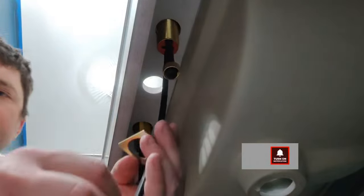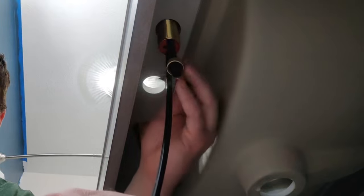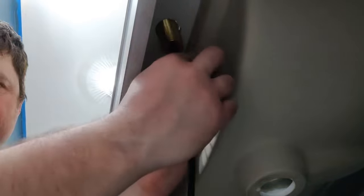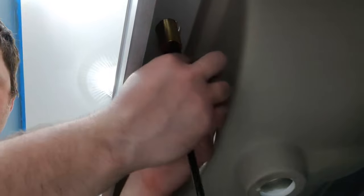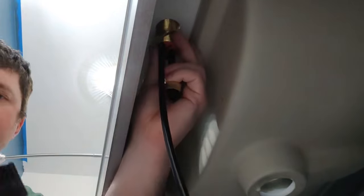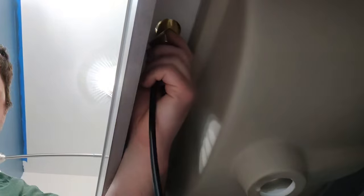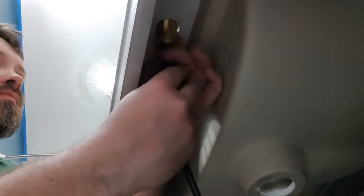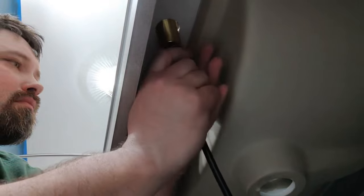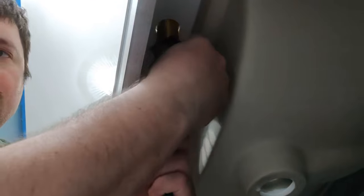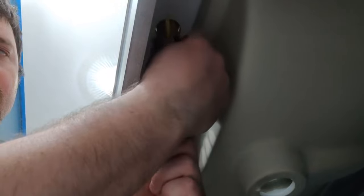Next I'm going to take my square washer and slide it up onto the valve. Then I'm going to take my mounting ring and screw it up onto the back side of the valve. Now it is important to note that the mounting ring does have a specific way it needs to go on so make sure you look at your instructions. It's really going to be dependent on the thickness of your countertop.